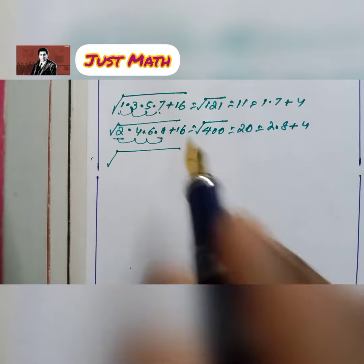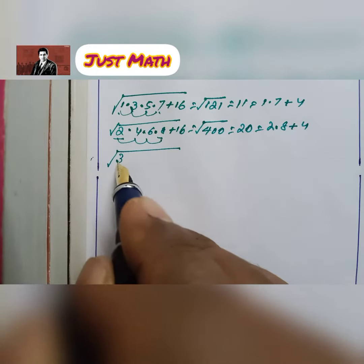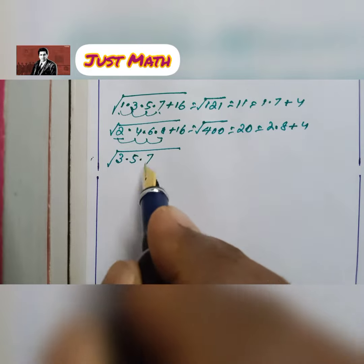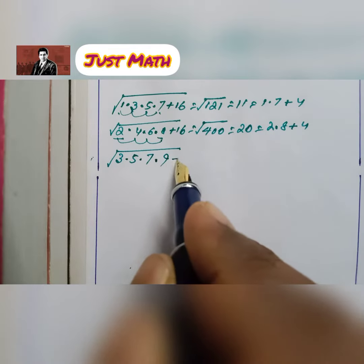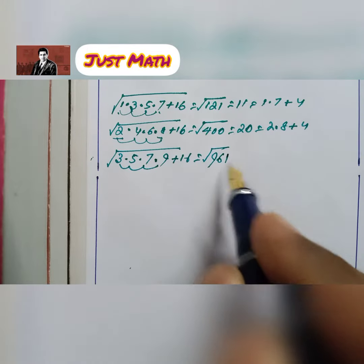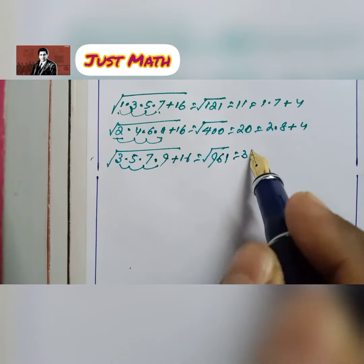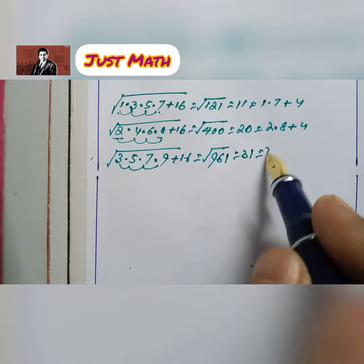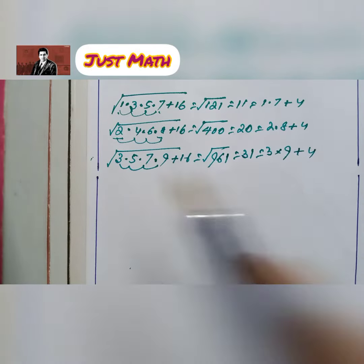Square root of 3 × 5 × 7 × 9 plus 16. Difference is 2 equals to 961 which is 31. 31 is 3 × 9 plus 4.